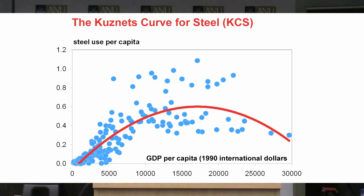Beyond intensity of use and onto the Kuznets curve for steel — what is that? It's an upside-down U-shape in steel use per capita and income per capita space. You're probably all familiar with the original Kuznets curve, which was about income distribution, and also the environmental Kuznets curve with a measure of pollution on the vertical axis, which also has that inverted U-shape. This is our data on steel use per capita, and you can see that the inverted U is there.